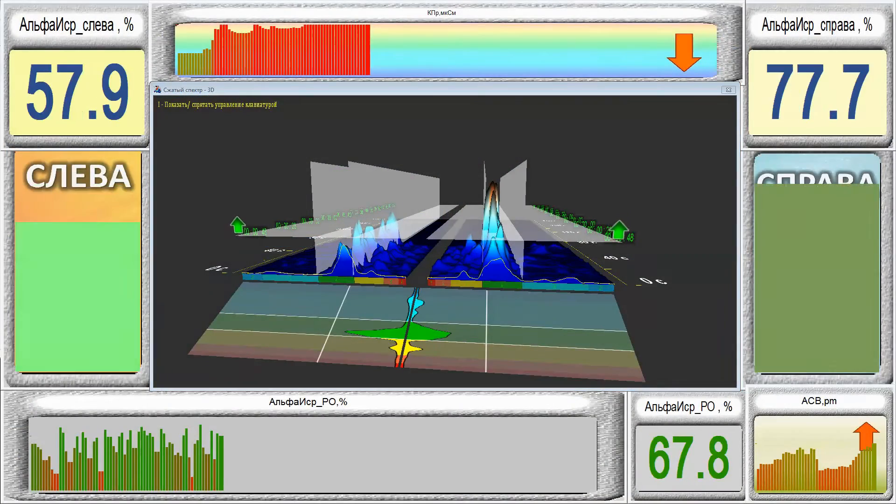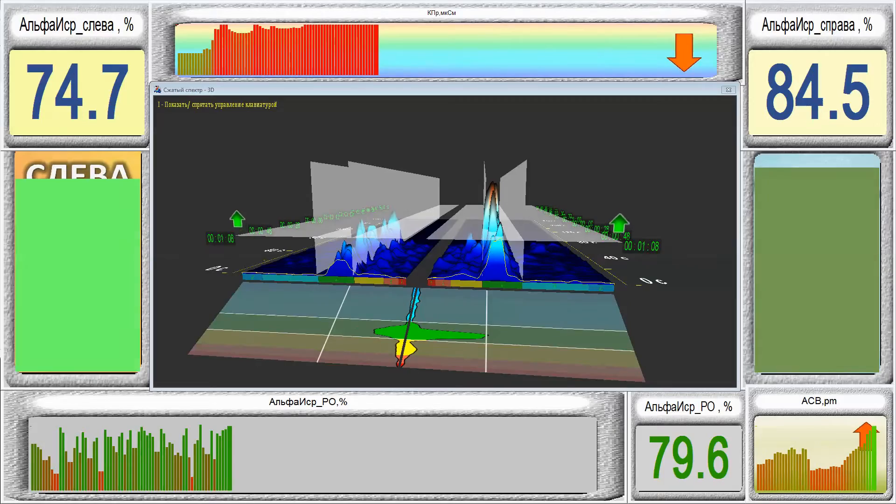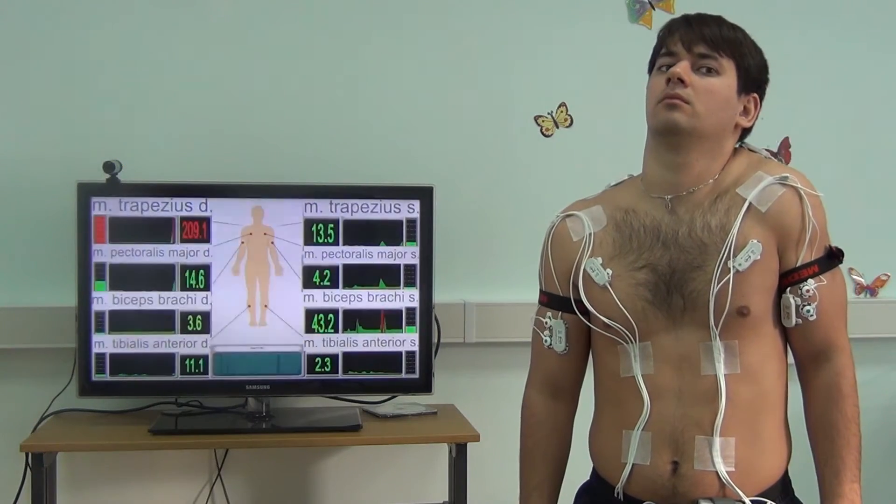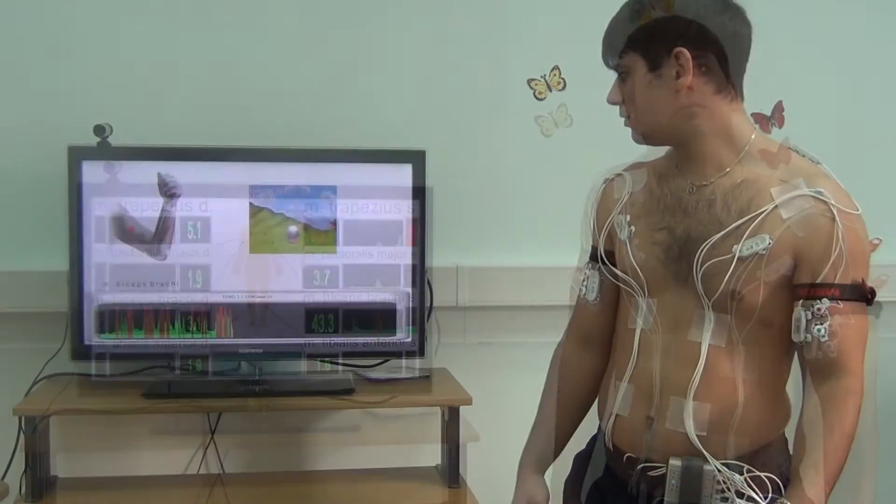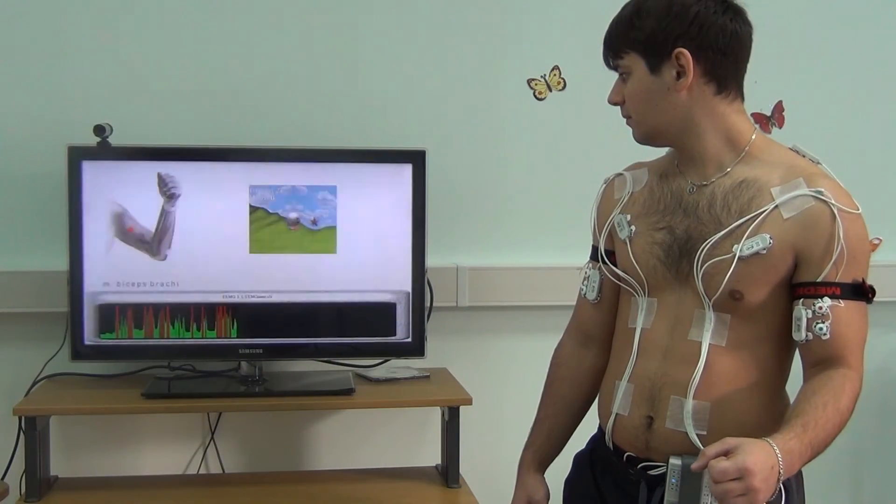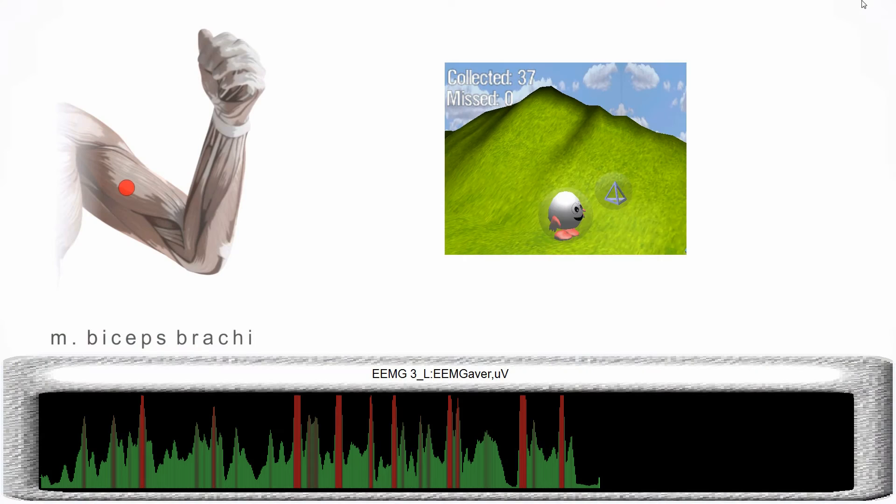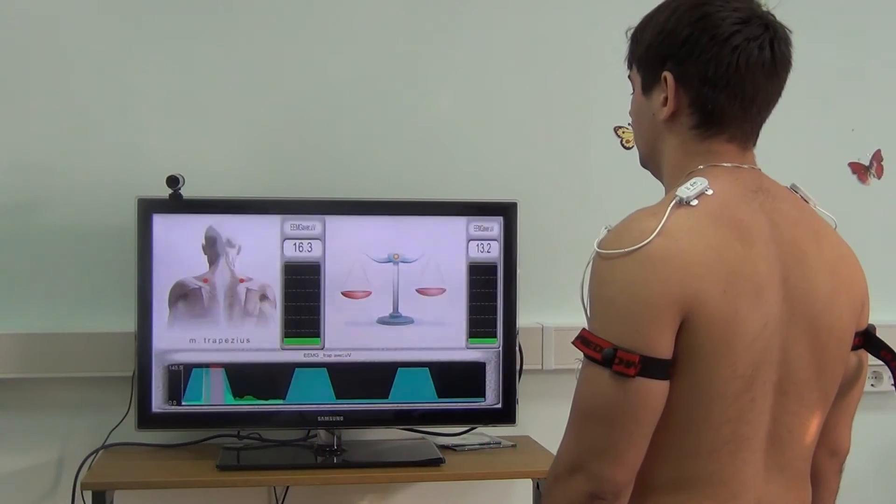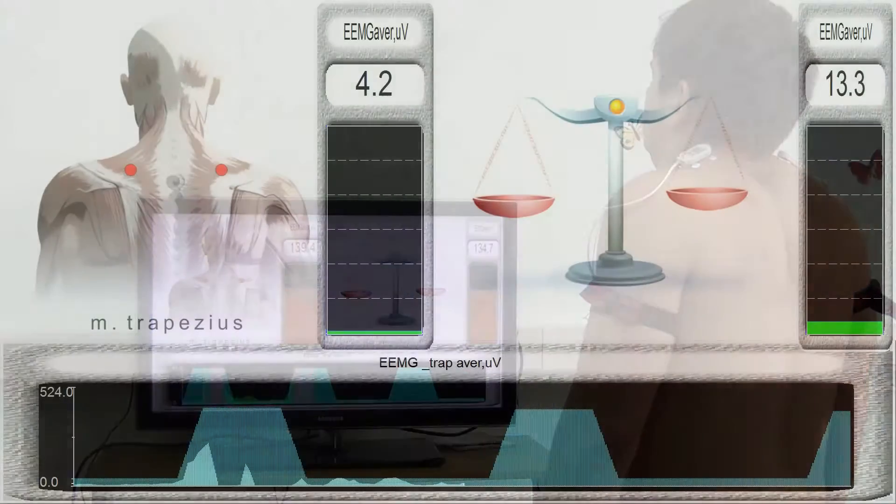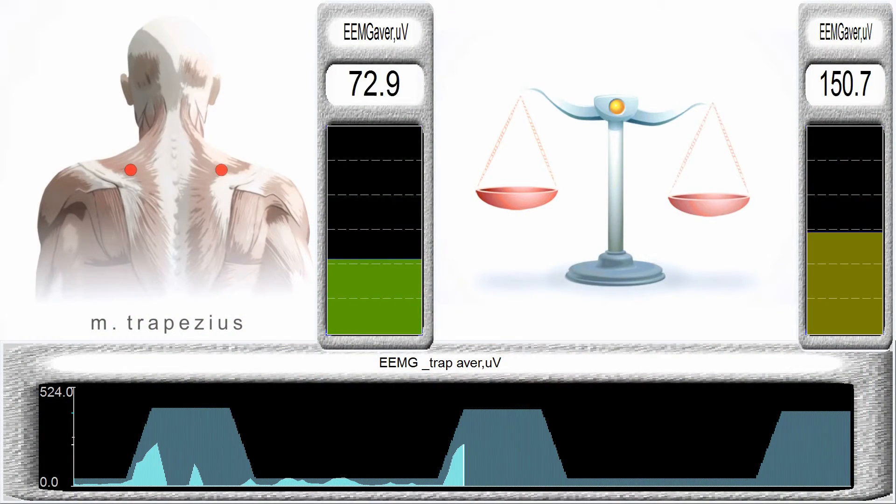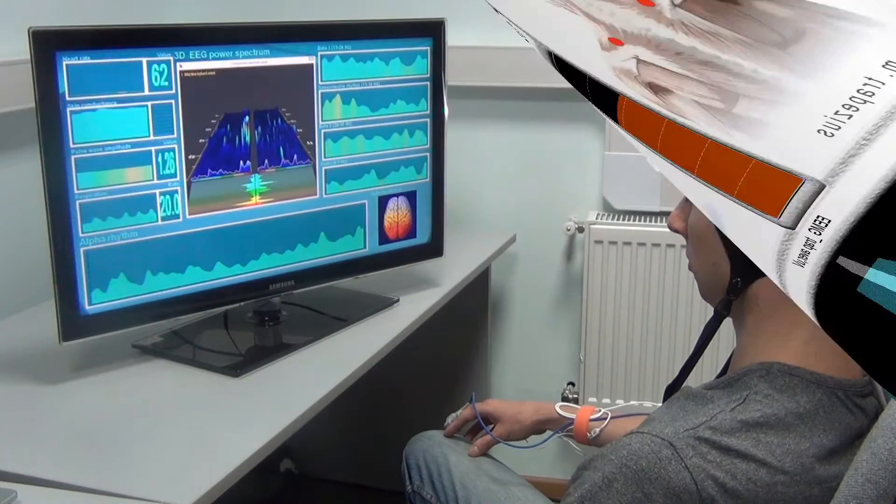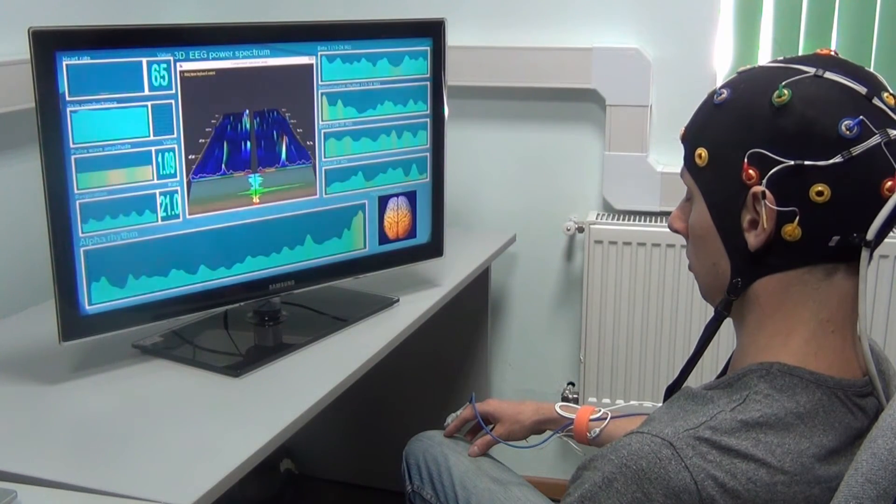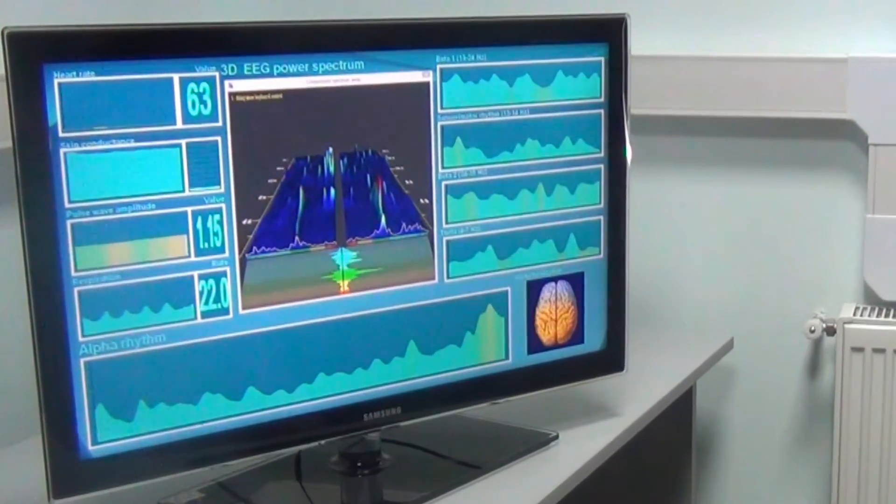Example of multi-parameter EEG training with 3D spectrogram. Example of biofeedback training with attachment of 8-channel envelope EMG. Example of biofeedback training with attachment of EMG sensors onto trapezoid muscle.